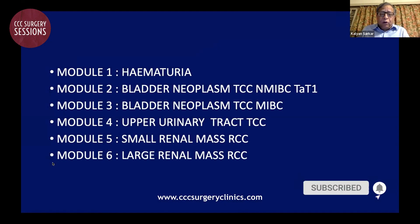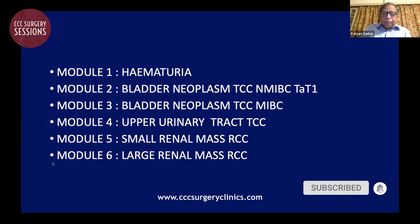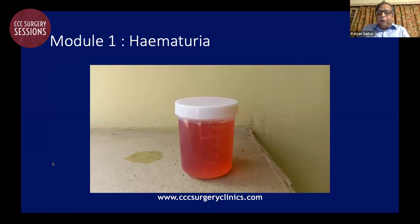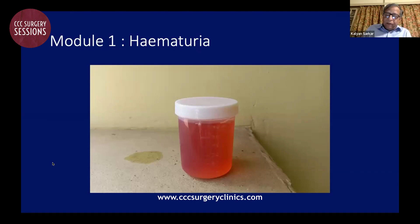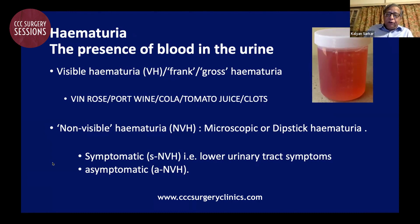There will be a few sessions on small renal masses, large renal masses, and a schedule change as shown on the screen. Module four will be the last module on upper tract transitional cell carcinoma. Let us first start with hematuria. Hematuria is a very common urological symptom, extremely alarming for the patient, and it can range from very mild to very severe. It is defined as the presence of blood in the urine, and we should go through the definitions first so that we know what we'll be discussing in the case discussions.